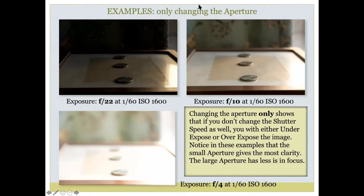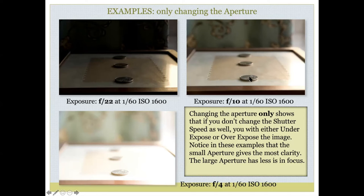Here we have one good exposure and two that are not good. This is an example of changing only one thing about your settings. Let's say we start with this image: exposure f/10 at 1/60s at ISO 1600. This is a good exposure — when it was taken, the light meter indicated in the middle. It's not too bright and not too dark. But let's say you want to get all of those quarters in focus, so you need to change your f-stop to f/22.